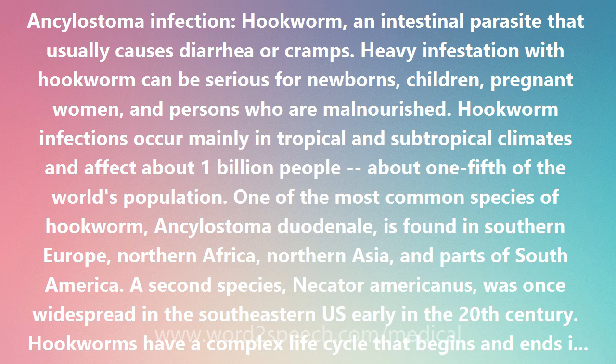In the small intestine, the larvae develop into 1.5-inch long worms, attach themselves to the intestinal wall, and suck blood. The adult worms produce thousands of eggs. These eggs are passed in the feces. If the eggs contaminate soil and conditions are right, they will hatch, molt, and develop into infective larvae again after 5 to 10 days.